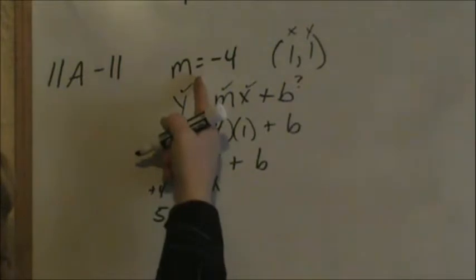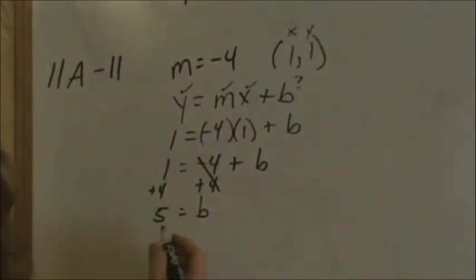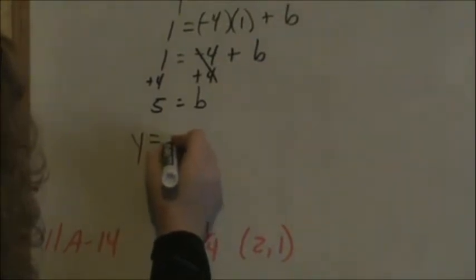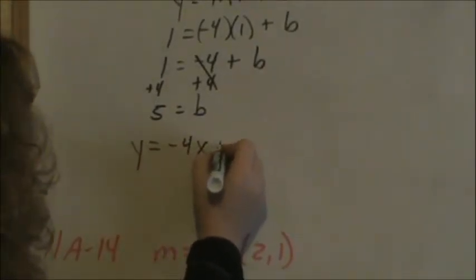You already know that we're given the slope. You now know the y-intercept, so you can write an equation for that line, y equals negative 4x plus 5.